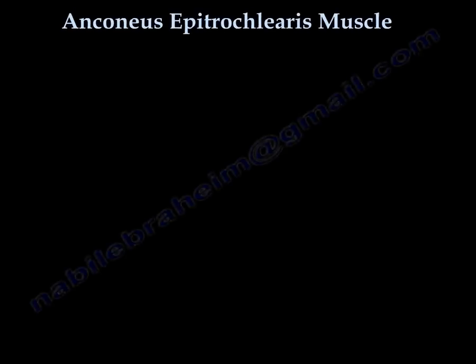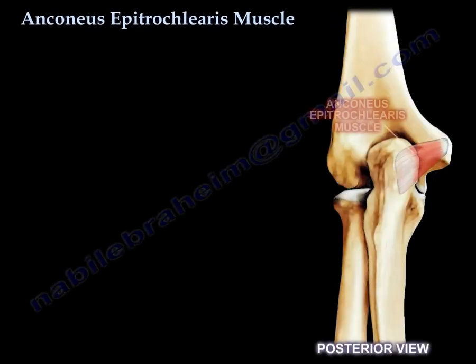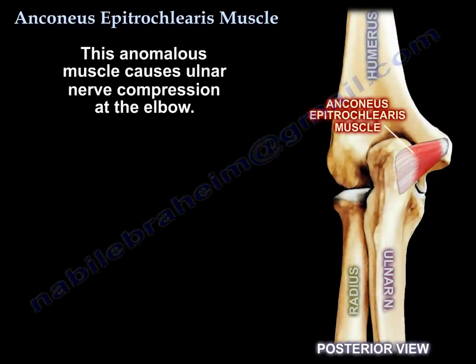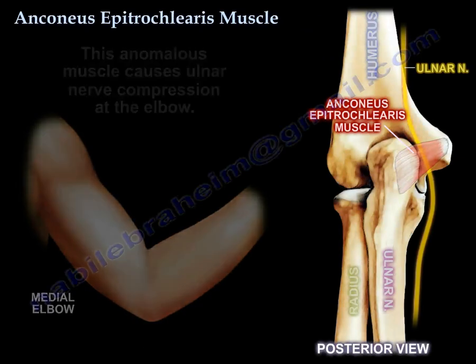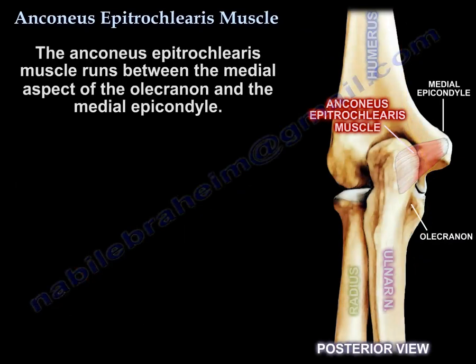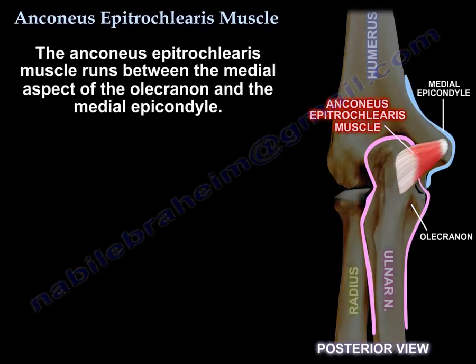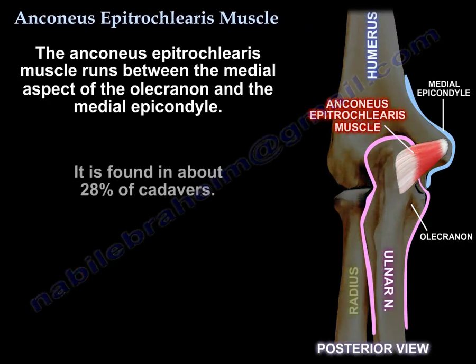The anconeus epitrochlearis is an anomalous muscle that causes ulnar nerve compression at the elbow. The muscle runs between the medial aspect of the olecranon and the medial epicondyle, and it is found in about 28% of cadavers.